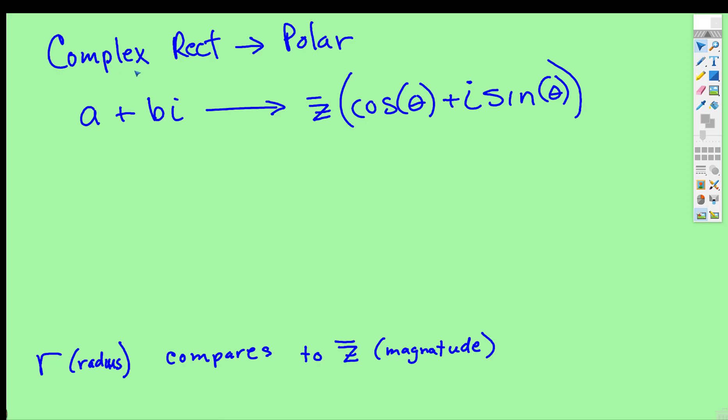We're now going to convert complex rectangular form, when it's A plus Bi, which is comparable to rectangular form. We're going to convert it to polar, comparable to R theta. The process is very similar.